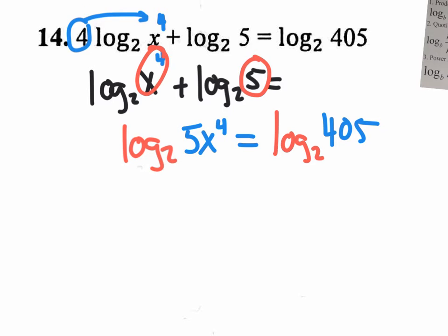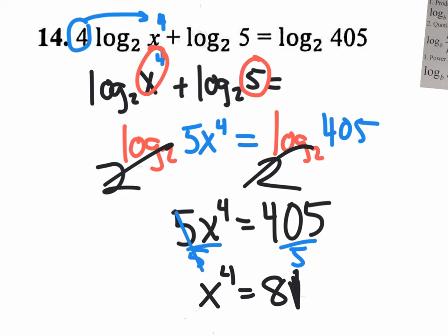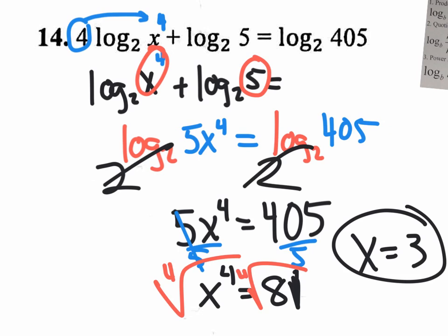Now we have log base 2 of 5x⁴ = log base 2 of 405. Raise both sides to the power of base 2 — the logs cancel — giving 5x⁴ = 405. Divide both sides by 5 to get x⁴ = 81. To undo the fourth power, take the fourth root: what times itself four times equals 81? Three, because 3 × 3 × 3 × 3 = 81. So x = 3.